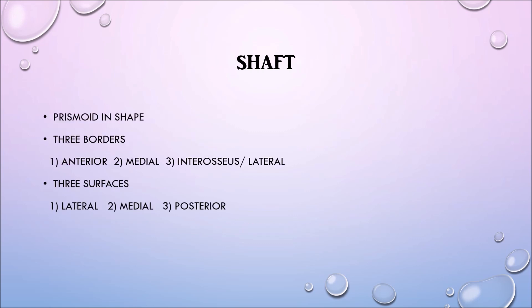Now let's look at the shaft. It is prismoid in shape. It has three borders: the anterior, medial and the interosseous or lateral borders. It has three surfaces: the lateral, medial and the posterior surface.